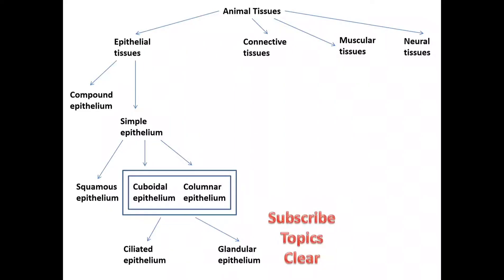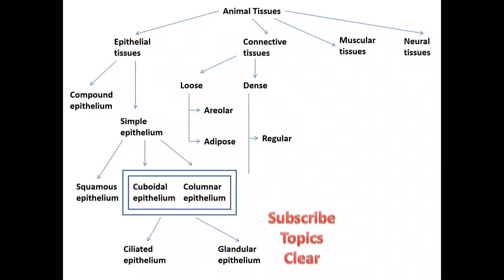Connective tissues are further divided into three types. First: Loose connective tissues, which are further divided into two types — Areolar loose connective tissues and Adipose loose connective tissues. Second type: Dense connective tissues, further divided into Regular dense connective tissues and Irregular dense connective tissues. Third type: Specialized connective tissues, further divided into three types — Cartilage, Bone, and Blood.